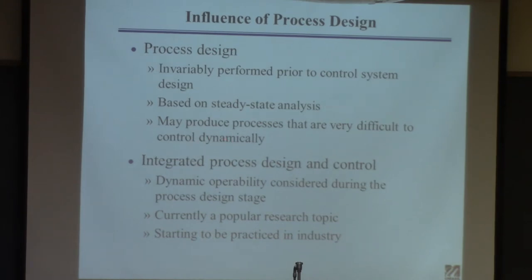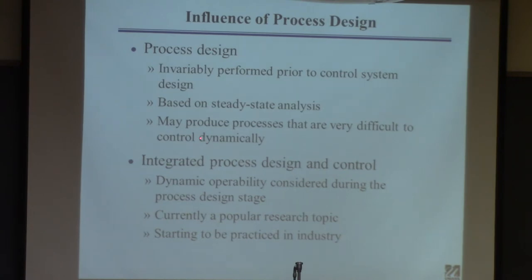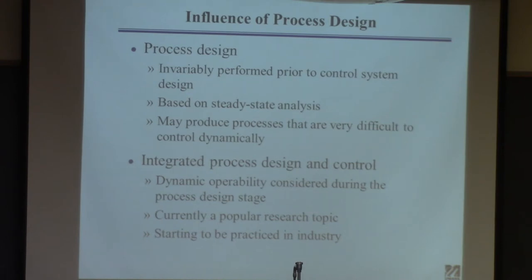You can take your model in Aspen Plus and create a dynamic model from it. It's a bit of work, but you can take the same model and make a dynamic version, then test out control before you build the plant. It's much easier to find out the design is not controllable on a computer than after you build the plant. There was a case — I think this was DuPont — where they built a $200 million plant that they could never start up. It never ran.